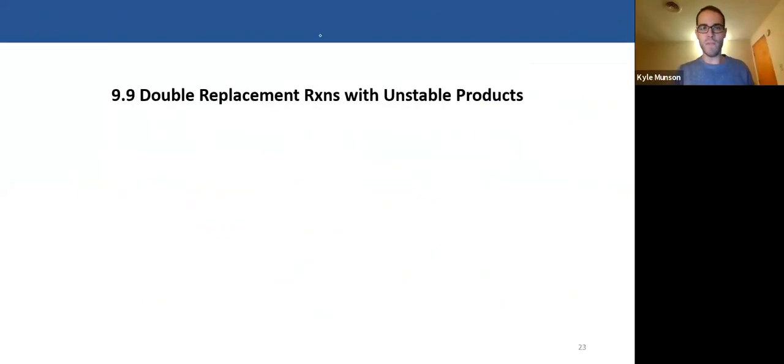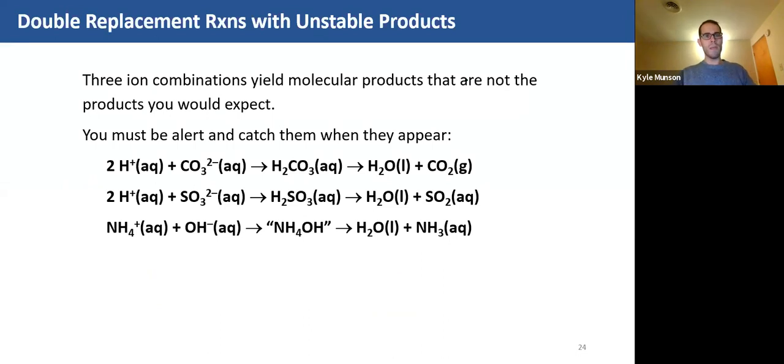So this is the definite final video for chapter nine, where we're gonna talk about double replacement reactions. Now we're gonna form unstable products. Three ion combinations yield molecular products that are not the products you would expect. So we need to be alert when we see them and catch them when they appear.